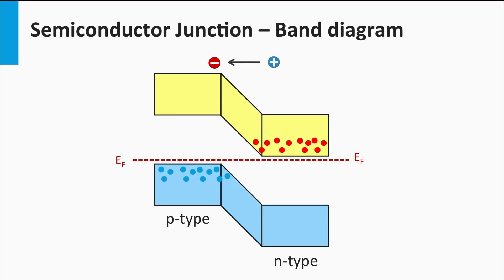In thermal equilibrium, the valence and conduction bands have a steep slope across the depletion zone. As discussed earlier, a slope in an electronic band diagram represents an electric field. The electric field across the depletion zone equals Q times Vbi, where Q is the charge of the hole or electron and Vbi is the built-in voltage. This slope causes minority electrons to move from the p-region to the n-region, while minority holes in the n-region move up the slope of the valence band to the p-region.